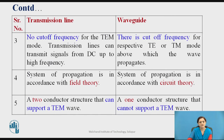In a transmission line, no cutoff frequency is considered — that is, the highest frequency can also pass through the transmission line. But a cutoff frequency is considered for the respective TE or TM mode in a waveguide. The system of propagation is in accordance with field theory in a transmission line, while in a waveguide it follows circuit theory. A two-conductor structure is used in a transmission line, while a one-conductor structure is used in a waveguide.